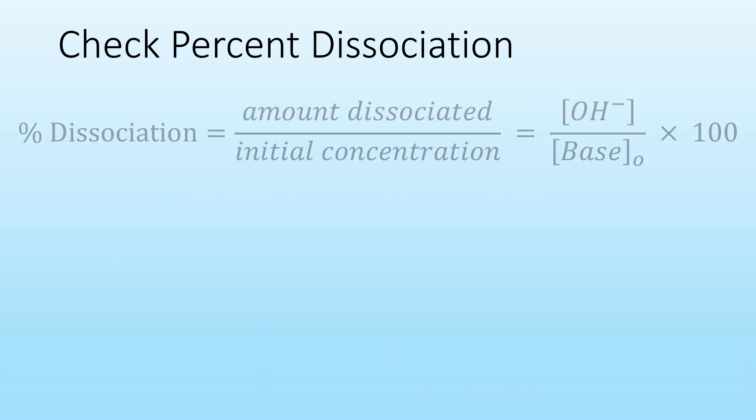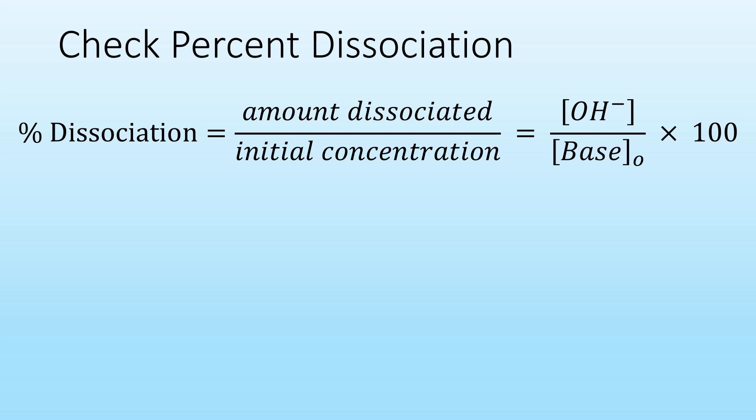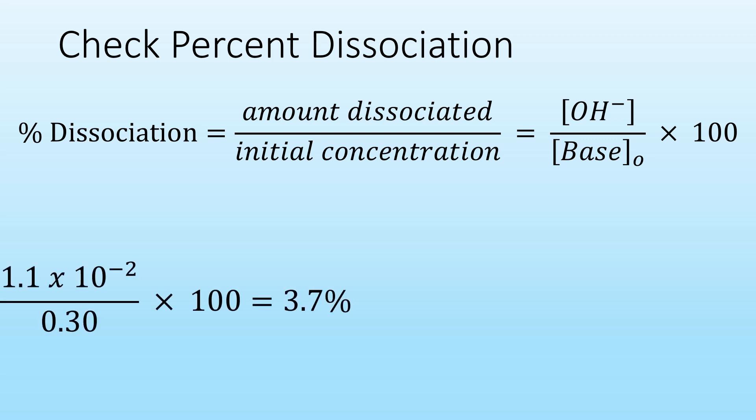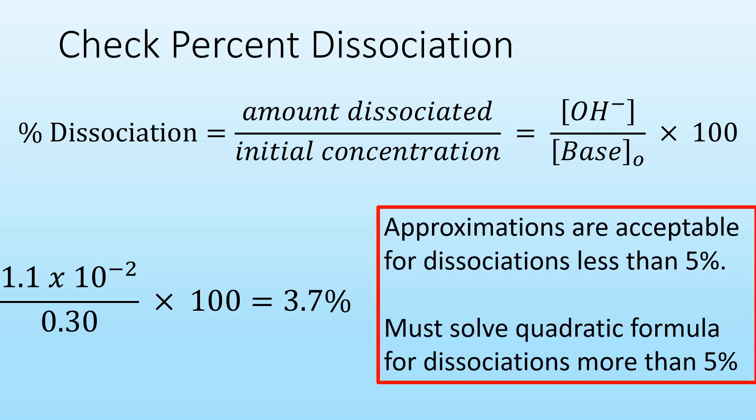Before finishing, we must check the percent dissociation — the percentage of base that dissociates with respect to the initial concentration. I'll take the concentration of hydroxide, 1.1 times 10 raised to the minus 2, and divide by the initial concentration of the methylamine, 0.30 molar. The percent dissociation is 3.7%. Approximations are acceptable for dissociations less than 5%, but we must use the quadratic formula for dissociations more than 5%. In this example, the approximation is acceptable.